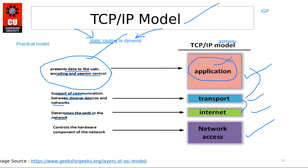Interior Gateway Protocols include RIP, OSPF, and EIGRP. Exterior Gateway Protocols are used when packets need to be sent to another network or gateway — this category includes BGP (Border Gateway Protocol). We will discuss each protocol in detail as we go deeper into computer networking concepts. The Network Access layer controls the hardware components of the network.